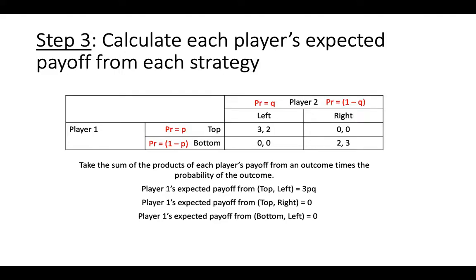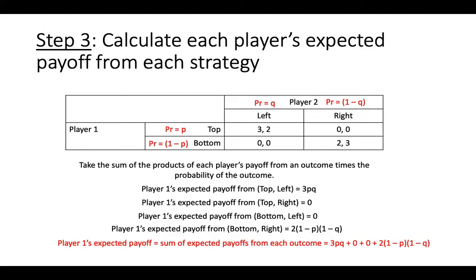Player 1's expected payoff from top right and bottom left are 0, and player 1's expected payoff from bottom right is 2 times the quantity 1-p times the quantity 1-q. Player 1's expected payoff is the sum of expected payoff from each outcome, which is 3 times p times q, plus 2 times the quantity 1-q.